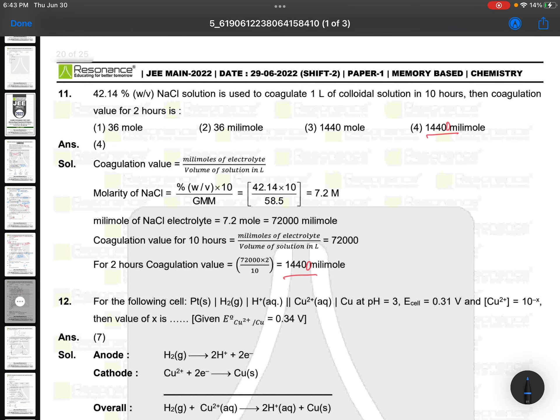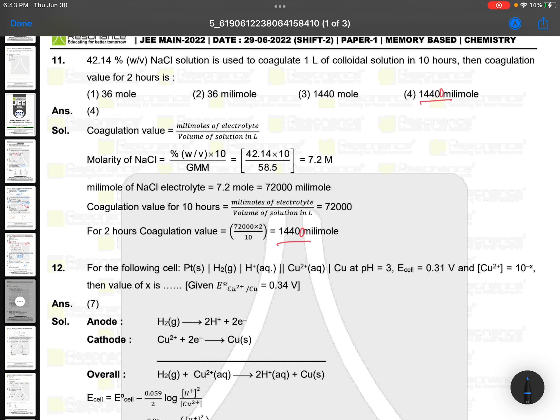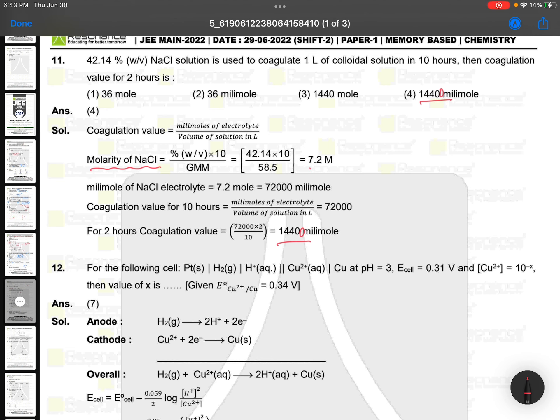42.14% NaCl is used to coagulate one liter colloidal solution in 10 hours, then coagulation value for 2 hours. This is also a lengthy question but if you have good idea, very simple. You can see molarity of NaCl is 7.2. When 7.2 mole is there, the millimoles will become 7200. 7200 millimoles are useful for 10 hours. For 2 hours, how much is required? 7200 × 2/10, that is 1440.